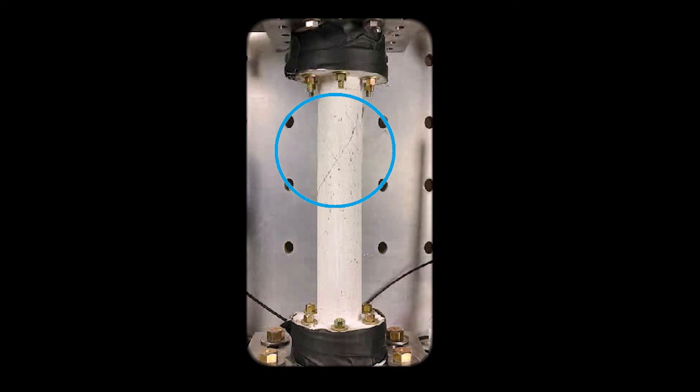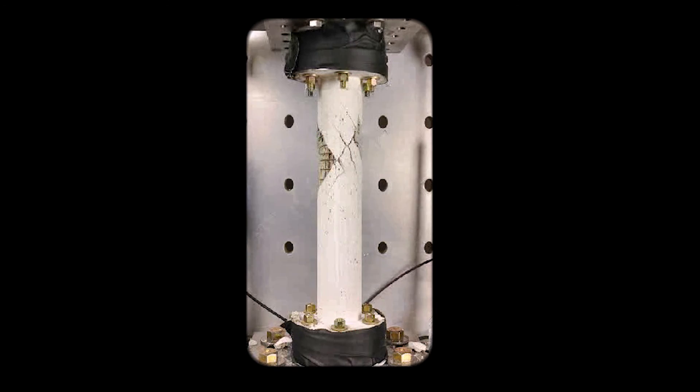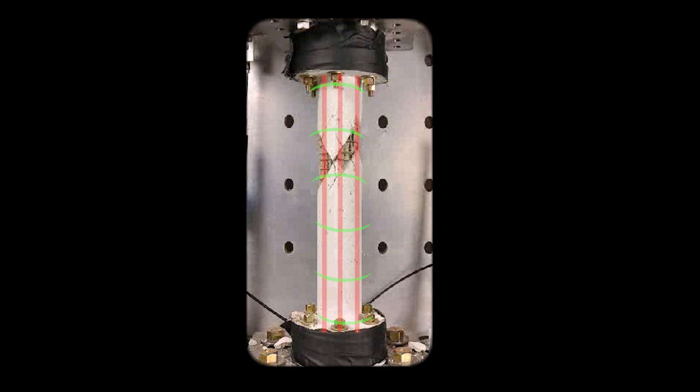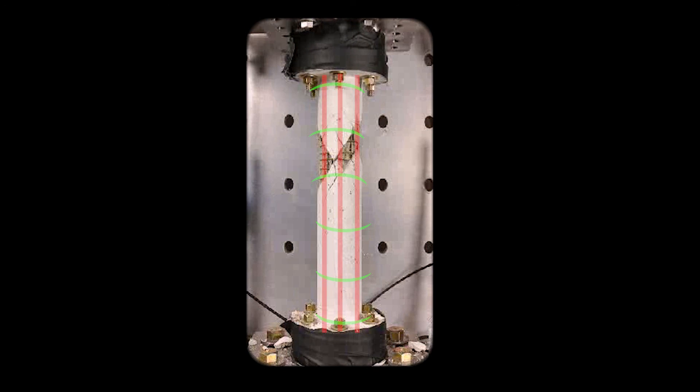Once the concrete cracks, the tensile forces are then resisted by the reinforcement, and thus the ultimate torsional capacity depends on the amount of provided reinforcement.